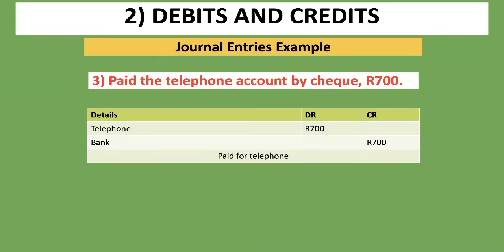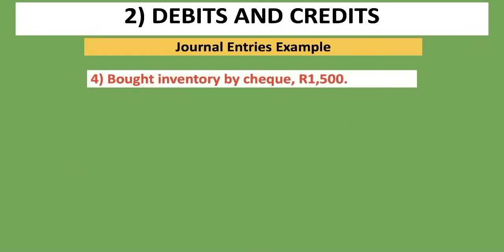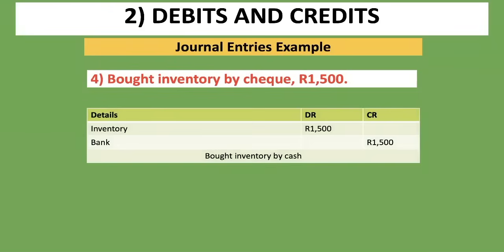Transaction four: bought inventory by check, 1,500 rand. Inventory is the first account — an asset that is increasing, so we debit it. We paid by check, so Bank is the second account. Bank is an asset that is decreasing here, so it goes on the credit side. Journal entry: Debit Inventory 1,500 rand, Credit Bank 1,500 rand. Narration: bought inventory by cash.